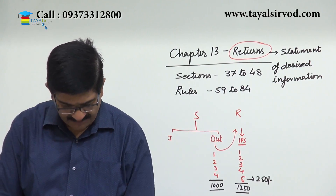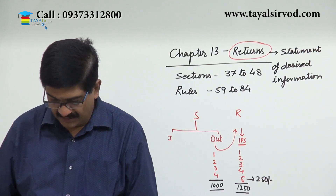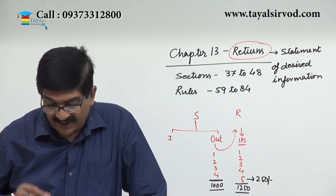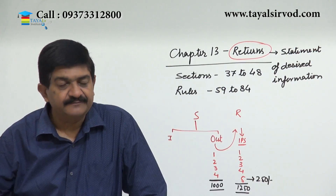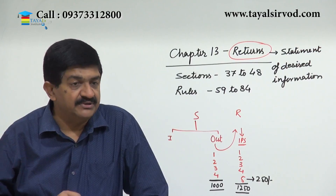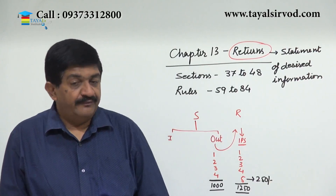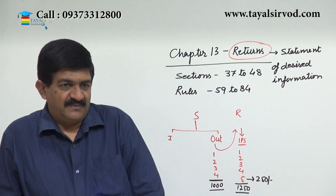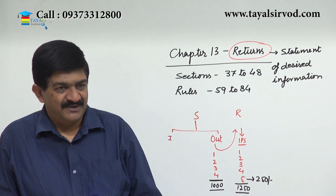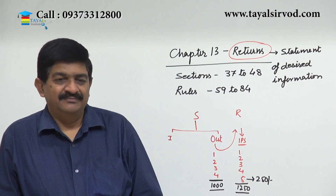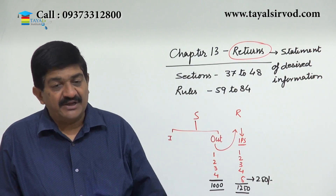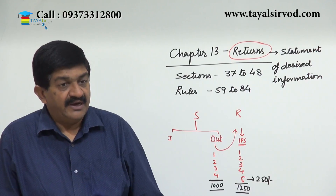Moving to the next page: under GST laws, the correct and timely filing of returns is of utmost importance. Filing correct information is very crucial because rectification will not be allowed after a certain period of time. Rectifications are possible only up to filing of the return for the month of September of the succeeding financial year, or filing of the annual return, whichever comes earlier. Beyond that, rectifications are not allowed.